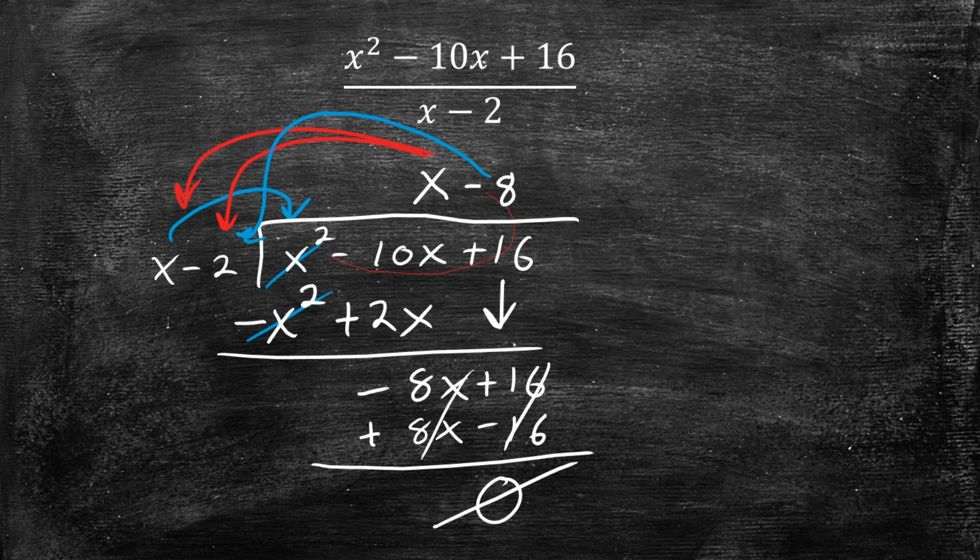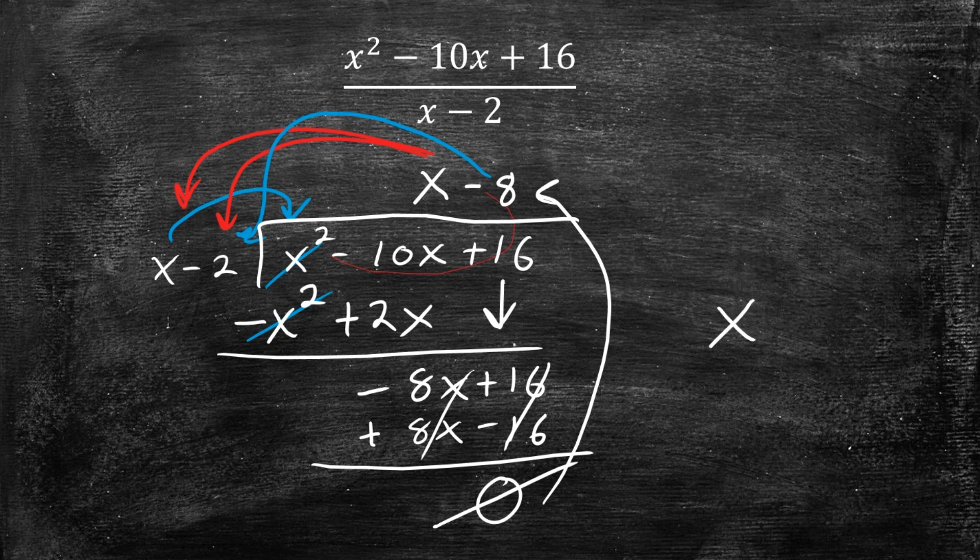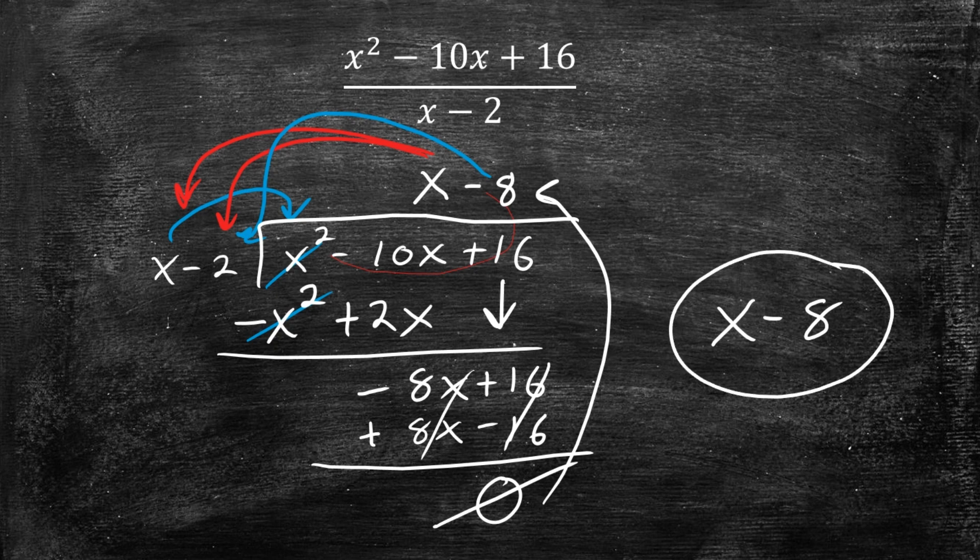So whenever you have no remainder, this answer here is going to be your answer. So the final answer to this question is x minus 8. And what you can do to double check is you can actually just take this x minus 8 and multiply it to x minus 2, and you should get the numerator. So we found out what our answer is. Therefore, this example is complete.